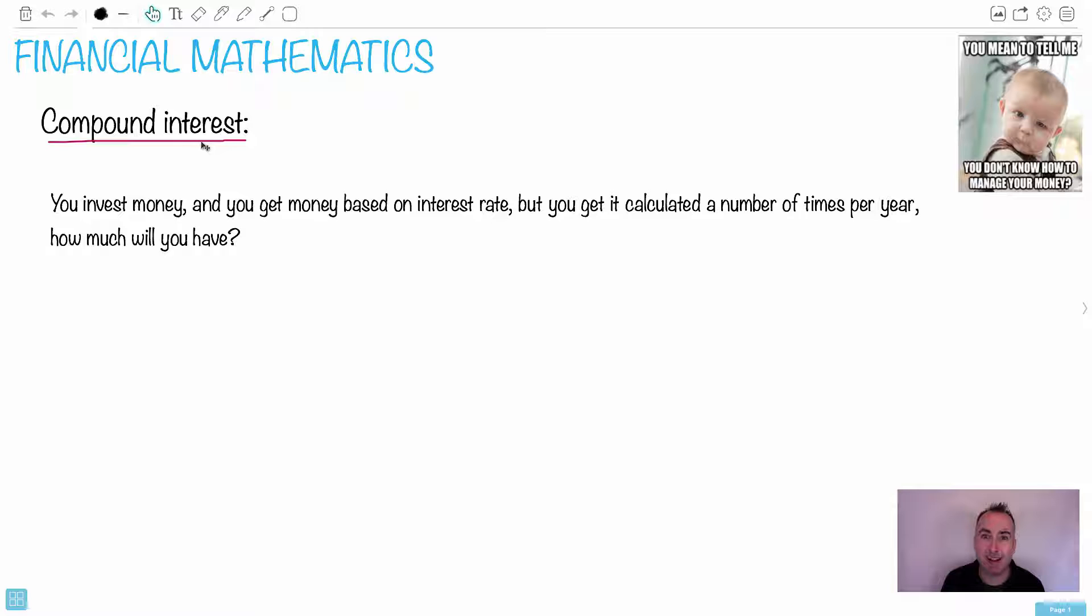So this thing called compound interest, what does that mean? Normally this is related to you investing money or money being invested in some way. It could be depreciating or appreciating, as we say. In other words, money can go up in value or down. Normally we're going to be considering going up in value. So here in compound interest, we're going to be investing money. You're going to get money based on some interest rate, so it's going to grow based on some percent, but you're going to get it calculated a certain number of times per year. The question is then, how much will you have at the end?